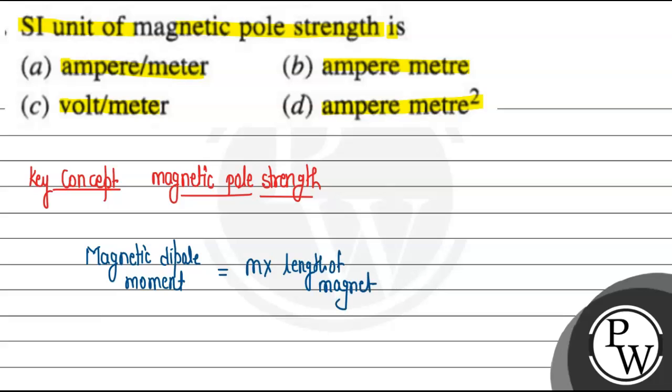What is M here? M is actually the magnetic pole strength. If we have a bar magnet, it's a common magnetic dipole. It has a north pole on this side and a south pole on this side.